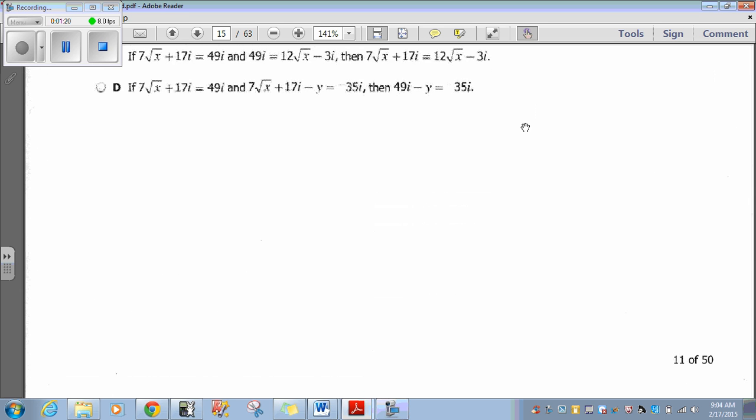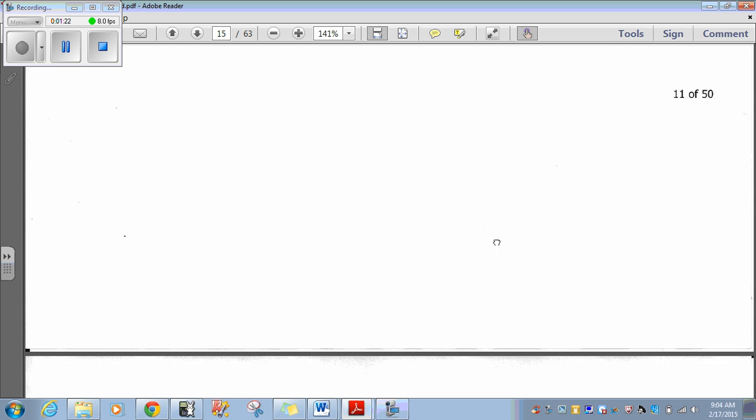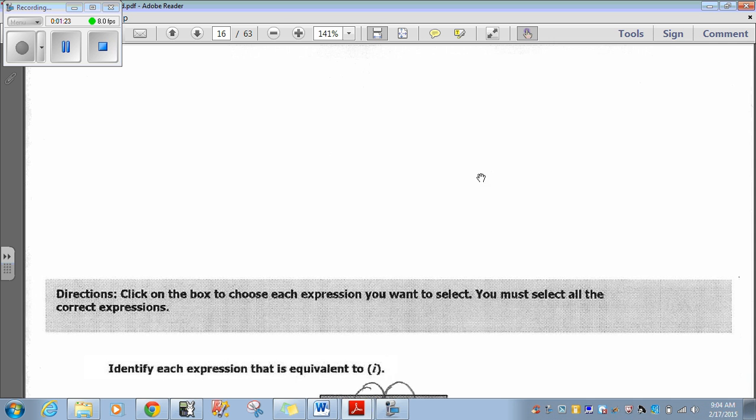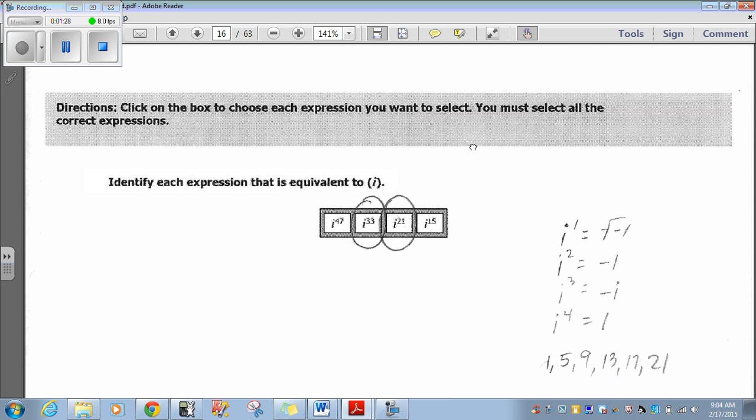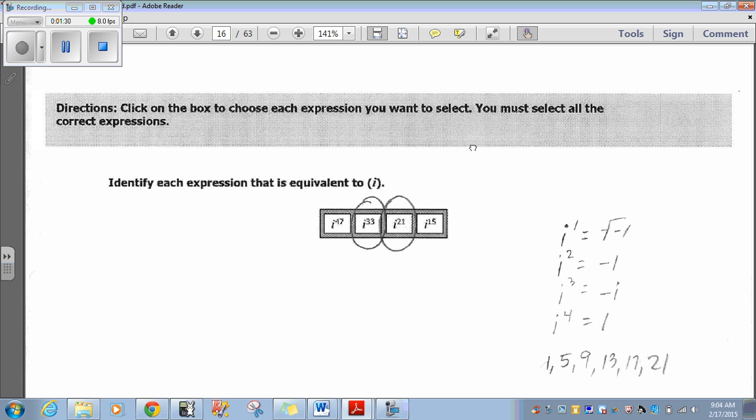Let's move on to question 12. Directions: Click on the box to choose each expression you want to select. You must select all correct expressions. It says identify each expression that's equivalent to i. So i, as your teachers have shown you, you should know that i, or just simply i to the first, is the square root of negative 1.